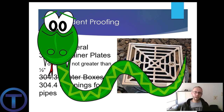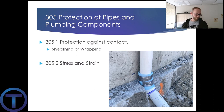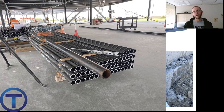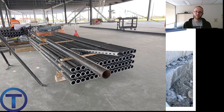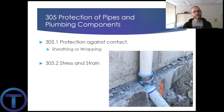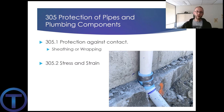Let's go on to 305: Protection of pipes and plumbing system components. 305.1, protection against contact. To understand this, we need to know the difference between a ferrous and a non-ferrous metal. Ferrous means it has iron in it — steel, cast iron, galvanized steel. Non-ferrous means it doesn't have iron in it; copper is the main one we deal with in plumbing. And we are also required by 303.2 to follow the manufacturer's installation instructions.